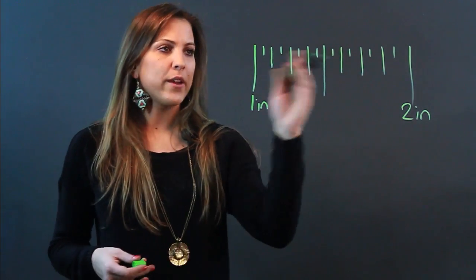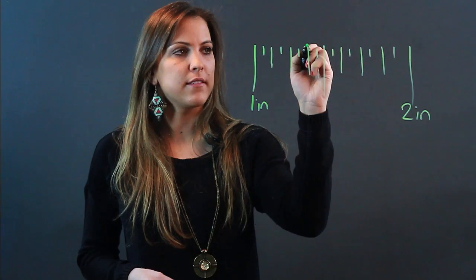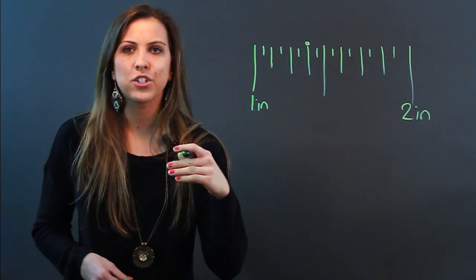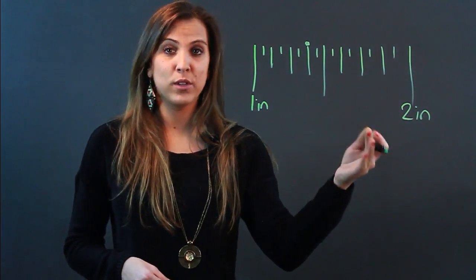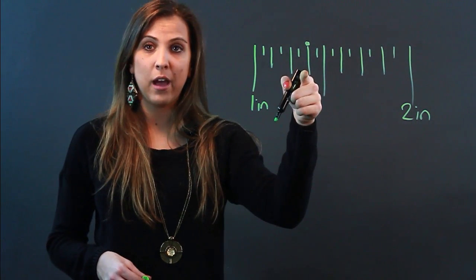So let's say you were measuring an object and that object ended right around here. Well if we're measuring it out of sixteenths then it's really simple because all you have to do is count how many spaces it is.